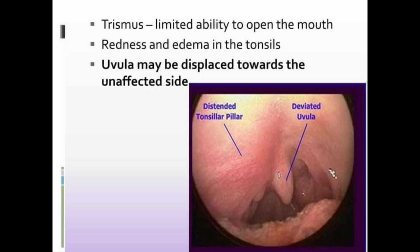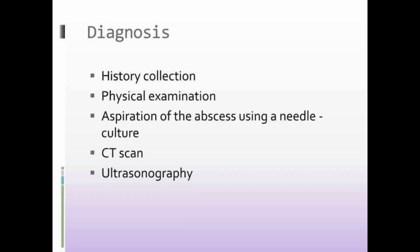Other manifestations include deviation of the uvula to the opposite side of the abscess, and redness and edema of the tonsil. Diagnosis is primarily by history and physical examination. During physical examination, the abscess can be aspirated, though sometimes it may be non-yielding. If the patient has progressive worsening symptoms with trismus and difficulty turning the head, a CT scan is mandated. Ultrasound can also be used to locate the abscess.